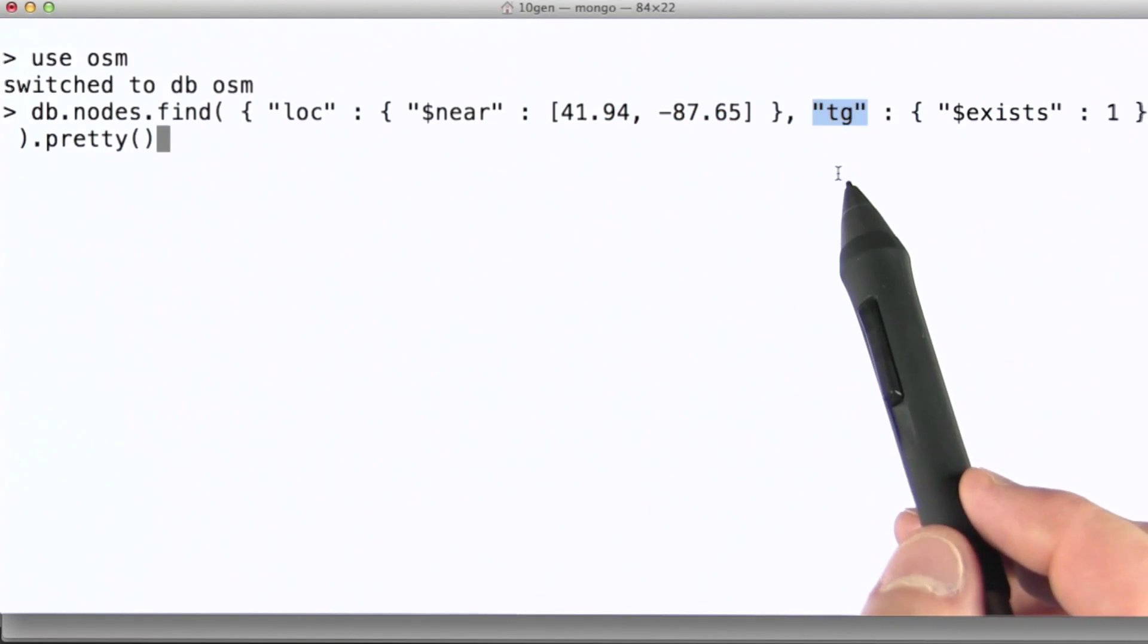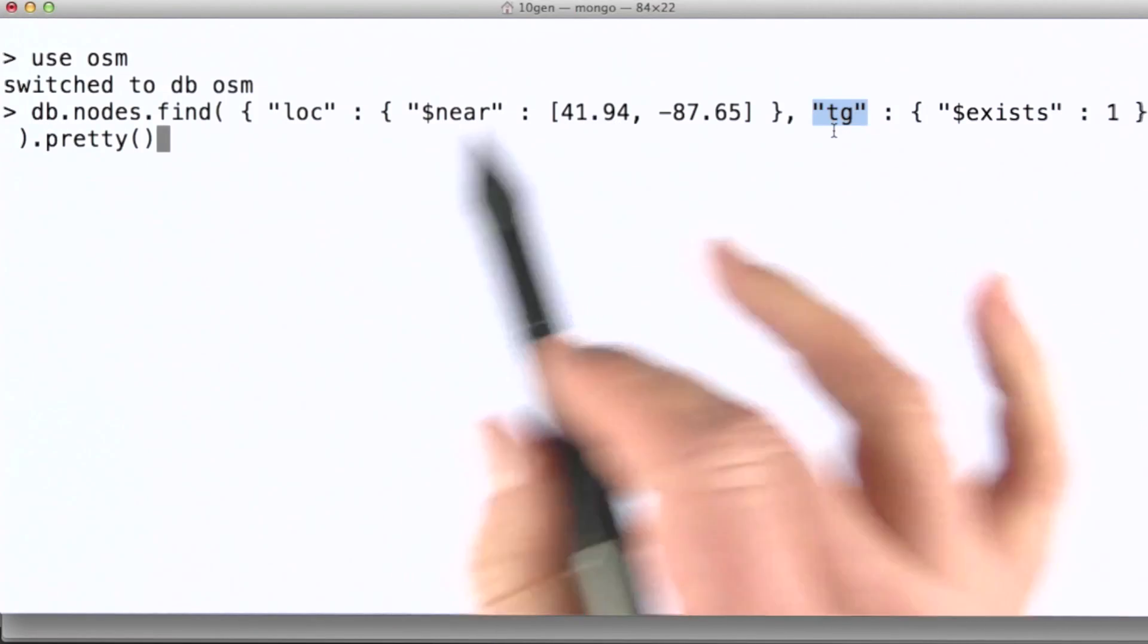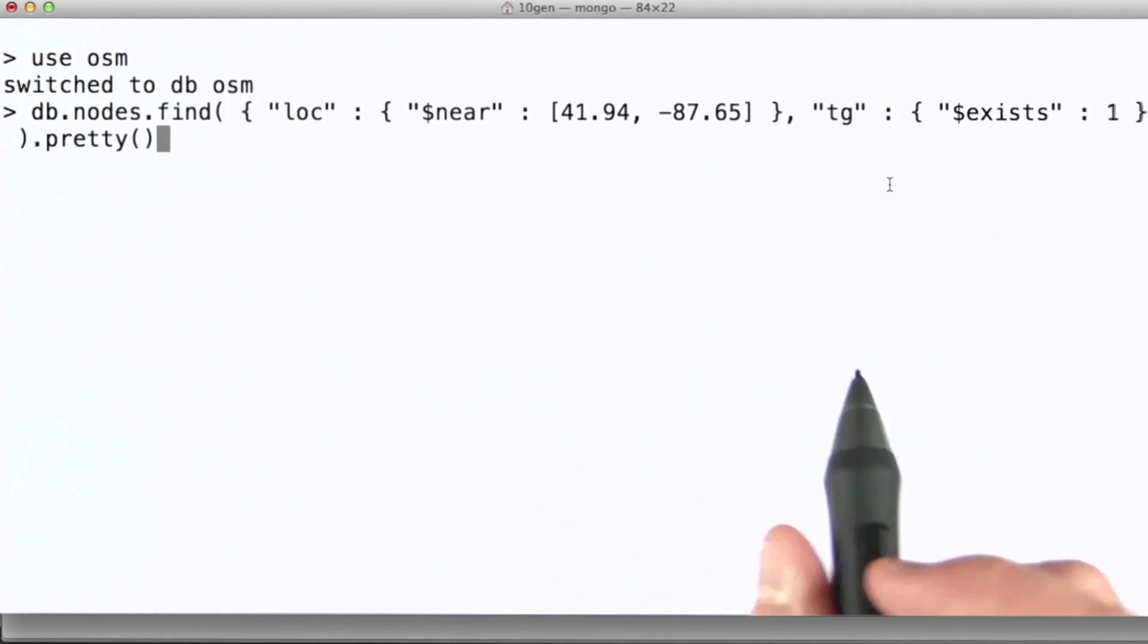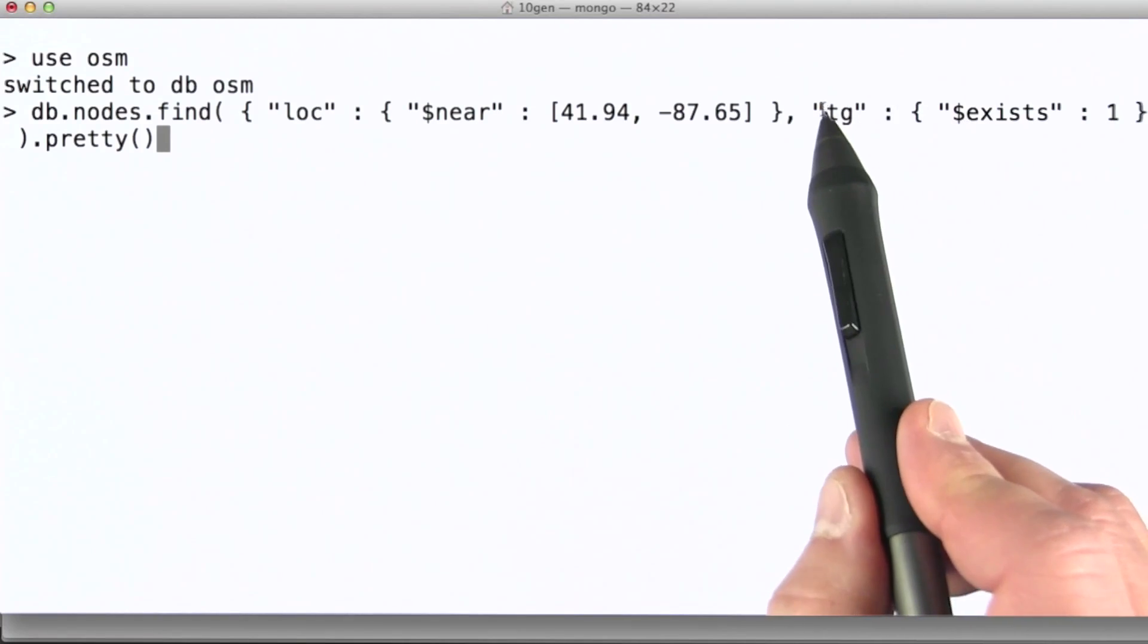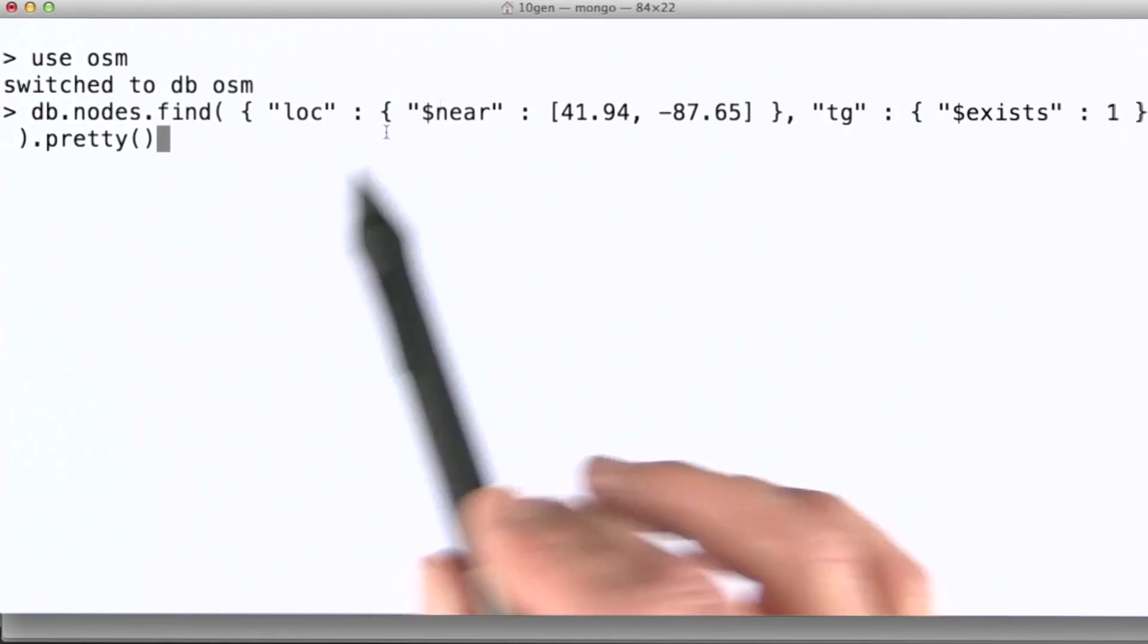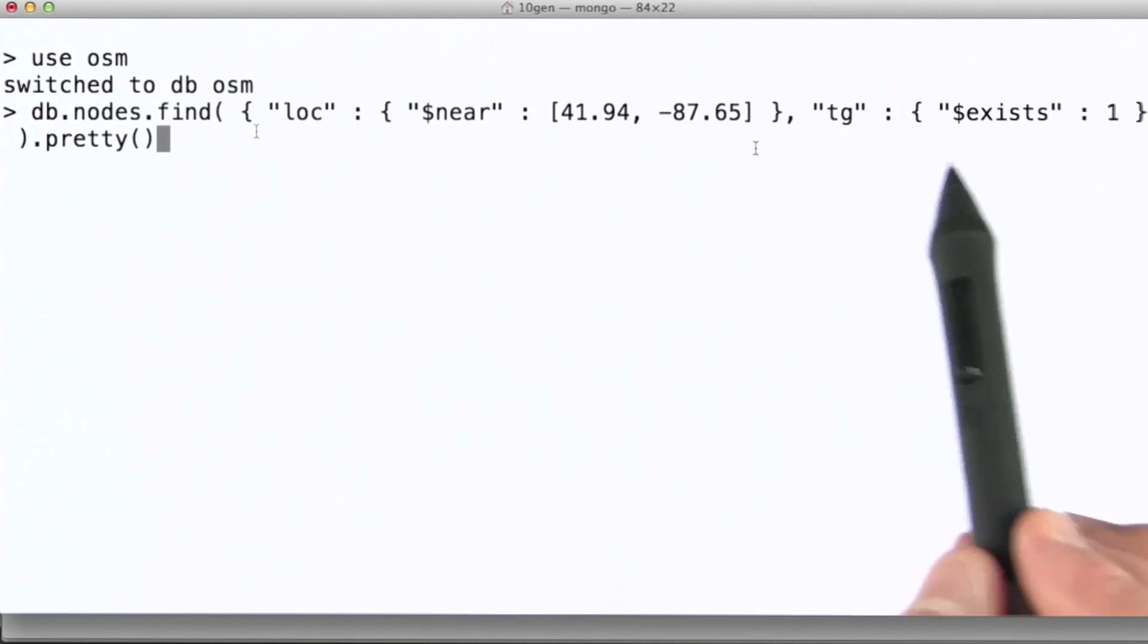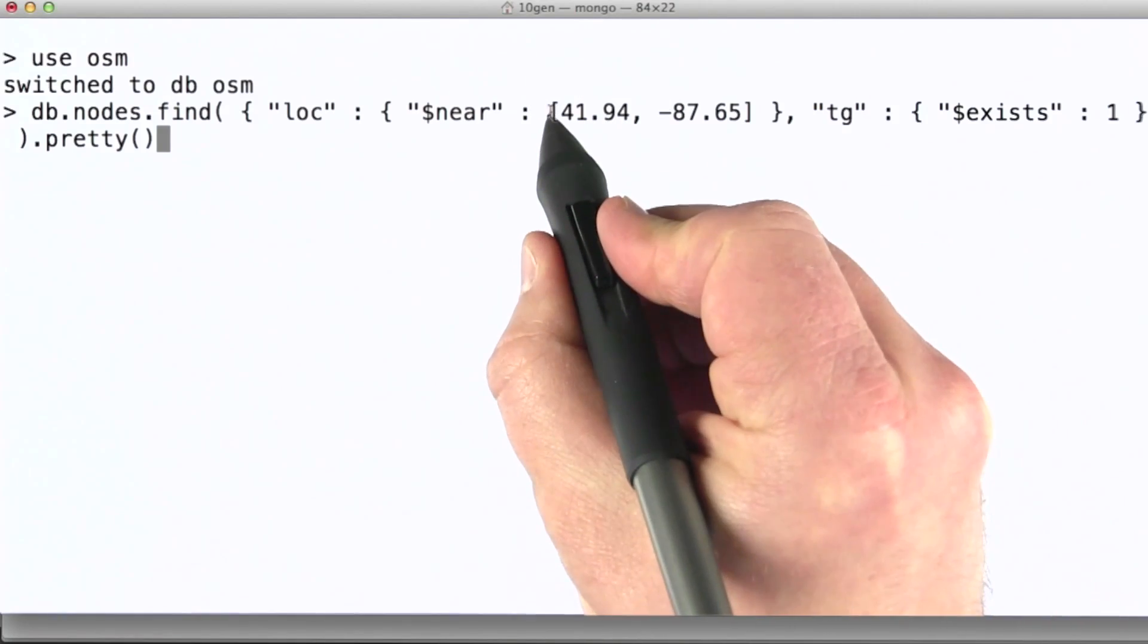You remember from a little earlier in the lesson when we looked at the tags that get applied to nodes that there's this TG field in this collection. Just so that the data we get back is a little bit more interesting, I'm just ensuring that there is a TG field, that it actually exists. Because then we'll have some data that has some names and other sort of tagging associated with it, so we can kind of figure out what's there near this particular location.